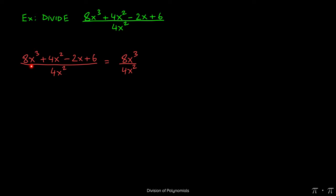So we divide the 8x cubed by 4x squared. To that we add the quotient of 4x squared over 4x squared minus 2x over 4x squared and finally plus 6 over 4x squared.